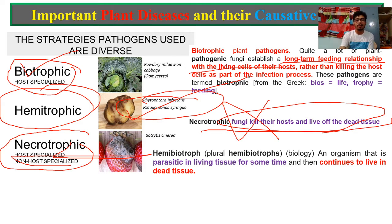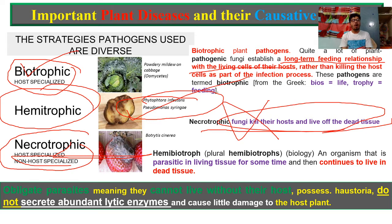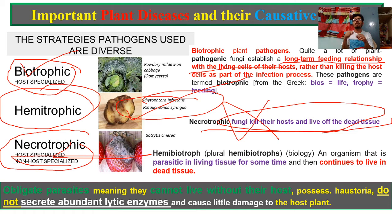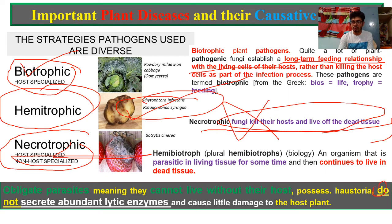Now the main point: what is an obligate parasite? Obligate parasite means they cannot live without their host — they are biotropic in nature. The host is necessary for their growth. The host area does not secrete abundant nutrients in time, which causes little damage to the host cell. This type of obligate parasite depends entirely on the living host for survival.